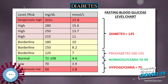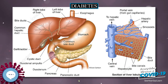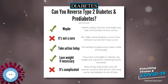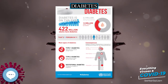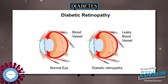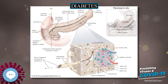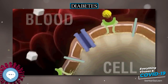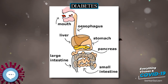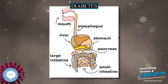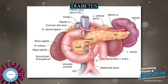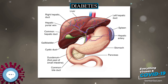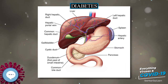Diabetes was one of the first diseases described, with an Egyptian manuscript from circa 1500 BCE mentioning too great emptying of the urine. The Ebers papyrus includes a recommendation for a drink to take in such cases. The first described cases are believed to have been type 1 diabetes. Indian physicians around the same time identified the disease and classified it as madhuma or honey urine, noting the urine would attract ants. The term diabetes — meaning to pass through — was first used in 230 BCE by the Greek Apollonius of Memphis. The disease was considered rare during the time of the Roman Empire, with Galen commenting he had only seen two cases during his career. Galen named the disease diarrhea of the urine (diarrhea urinosa).